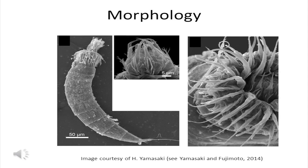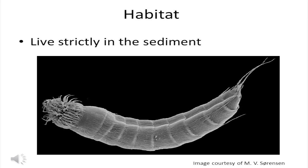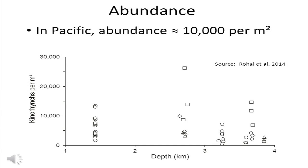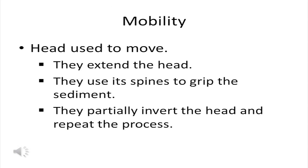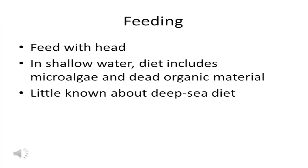Here are some scanning electron micrographs that show the complexity of the head in more detail. Kinorhynchs live strictly in the sediment. Kinorhynchs are much less abundant than the other meiofauna groups we've talked about — a typical value in the Pacific might be about 10,000 per square meter. Kinorhynchs use their head to move: they extend the head out, use the spines to grip the sediment, and then partially invert the head, which pulls the body along behind. In shallow water their diet includes microalgae and dead organic material; almost nothing is known about their diet in the deep sea. That's it for the meiofauna.